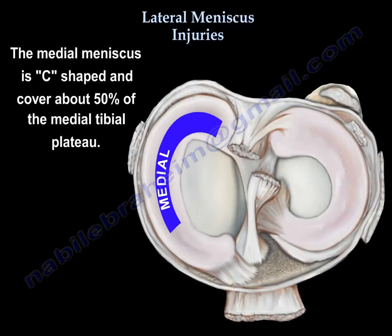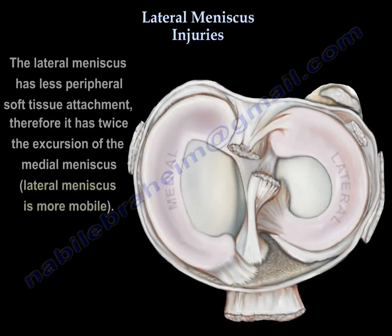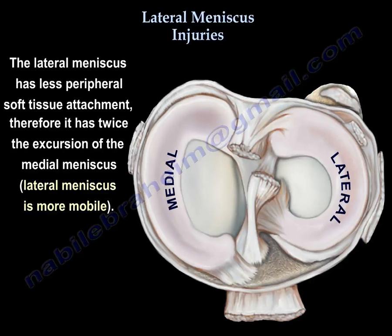The medial meniscus is C-shaped and covers 50% of the medial tibial plateau. The lateral meniscus has less peripheral soft tissue attachment; therefore it has twice the excursion of the medial meniscus, meaning it is more mobile.